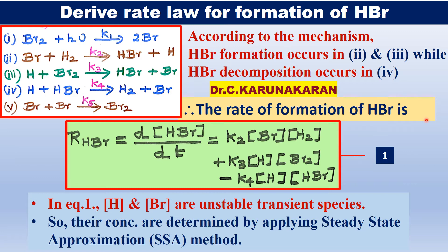So, d[HBr]/dt = k₂[Br][H₂] + k₃[H][Br₂] − k₄[H][HBr]. In competitive exams — GATE, CSIR, etc. — they will give the mechanism and ask you to derive the rate law and determine the order of the reaction. This is in the UG syllabus but is also important for GATE, CSIR, and other competitive exams. The concentrations of H₂ and Br₂ are known, but the concentrations of bromine atoms and hydrogen atoms are very unstable transient species and cannot be determined by experimental methods. However, their concentrations can be determined by applying the steady-state approximation method.